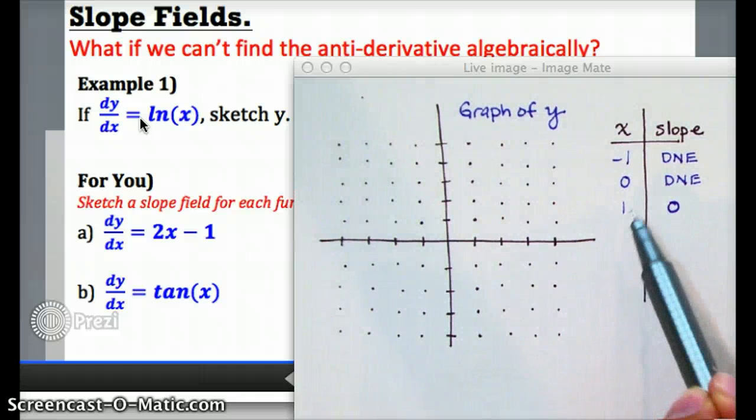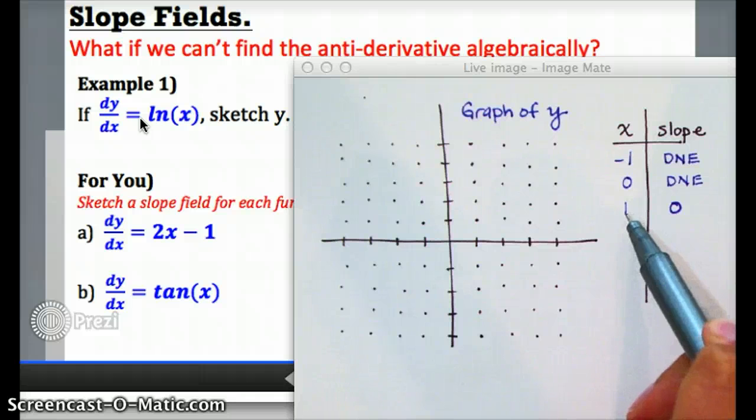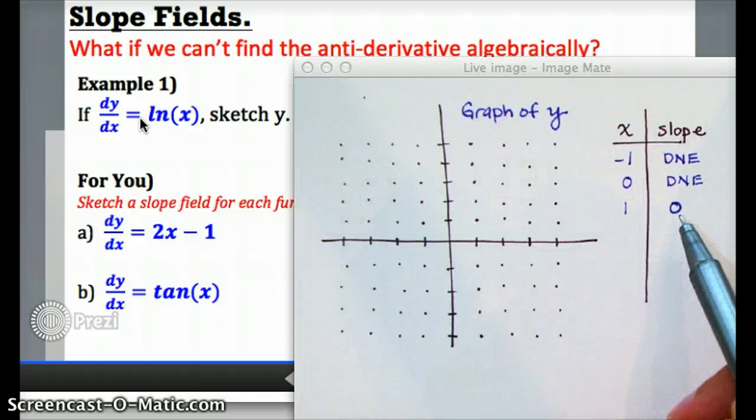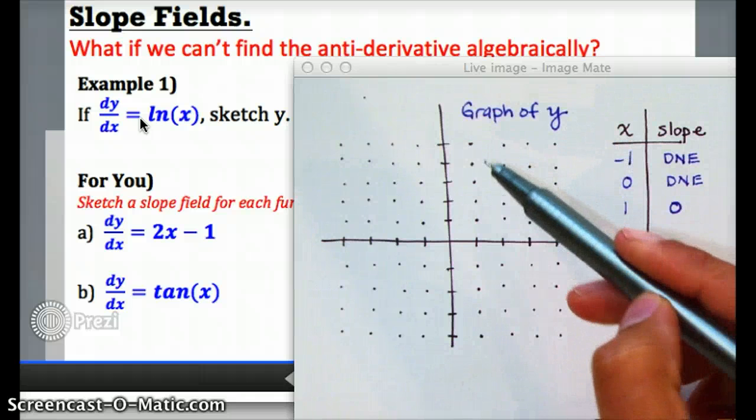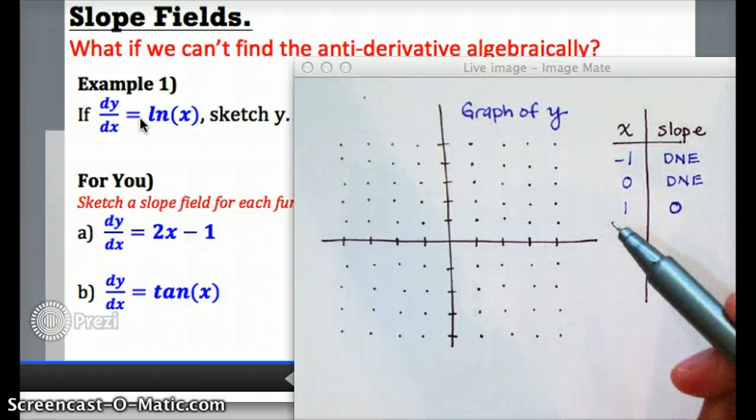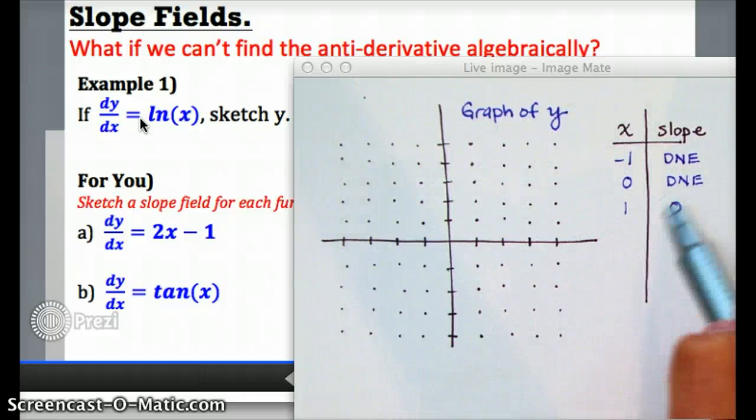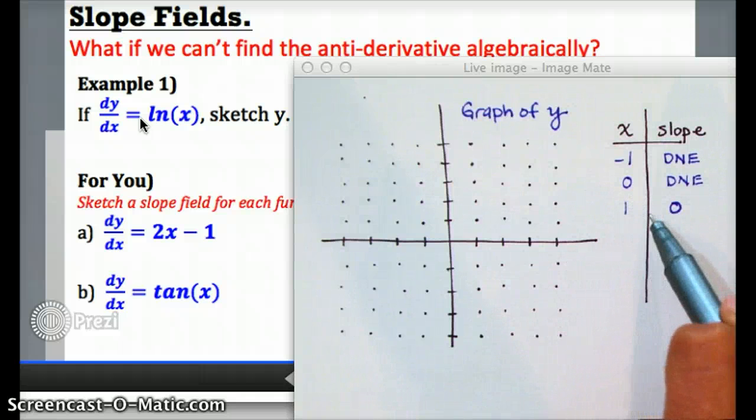Here's what that means. Any point on my grid that has an x value of 1 is going to have a slope of 0. Now, I don't know what the true y value of the graph is, which means in order to prepare for any possibility, I'm going to sketch a little tangent line at every point that has an x value of 1.